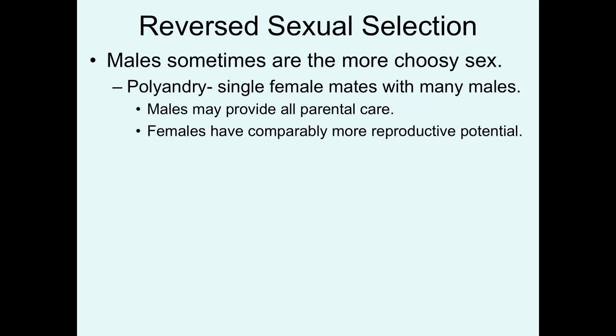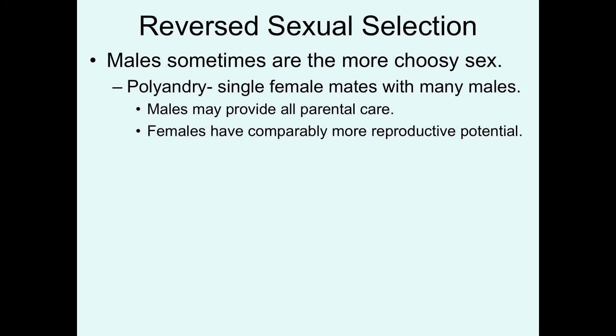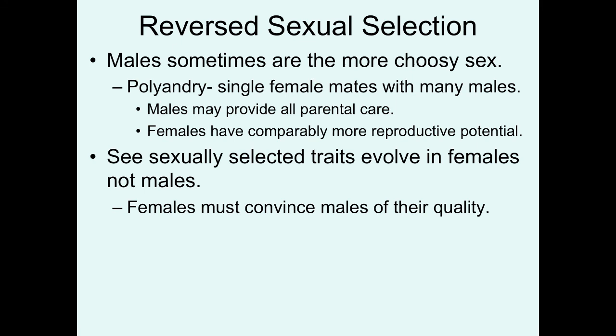The last thing I want to talk about is reverse sexual selection. In some species, males are the more choosy sex. This is typical of polyandrous mating systems. In polyandrous mating systems, a single female has pair bonds with multiple males, and in these species males oftentimes provide most or all of the parental care. The females are then free to produce more eggs, seek out more copulations with more males, and have comparably more reproductive potential.